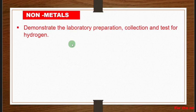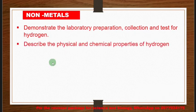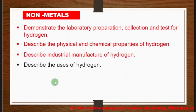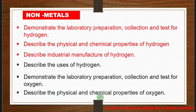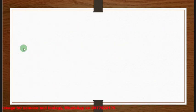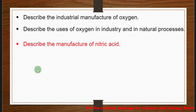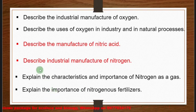Under non-metals, you need to describe the laboratory preparation, collection, and test for hydrogen gas, describe the physical and chemical properties of hydrogen, describe the industrial manufacture and uses of hydrogen. Similarly, demonstrate the laboratory preparation, collection, and test for oxygen, describe its physical and chemical properties, industrial manufacture, and uses. You also need to describe the manufacture of nitric acid, industrial manufacture of nitrogen, explain the importance of nitrogen as a gas, and explain the importance of nitrogenous fertilizers.